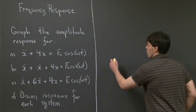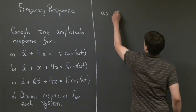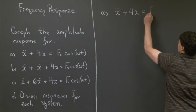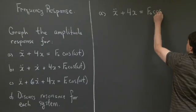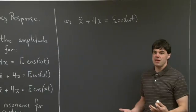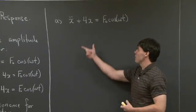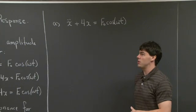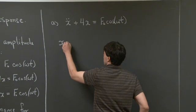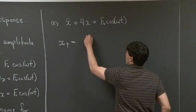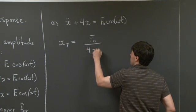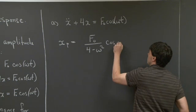So for part a, we're asked to graph the amplitude response to the differential equation x-double-dot plus 4x equals f₀ cosine(ωt). From a previous recitation, we already wrote down the particular response to this differential equation. I'm just going to write down the particular response, which has the form f₀ over (4 minus ω²) times cosine(ωt).